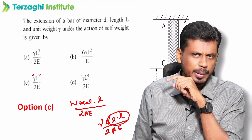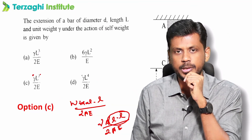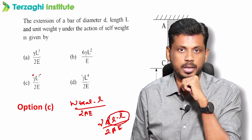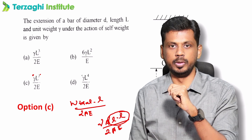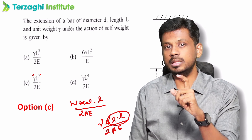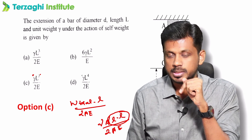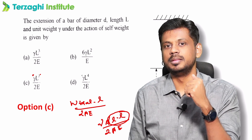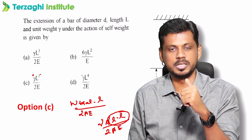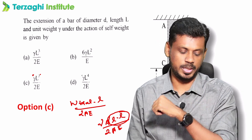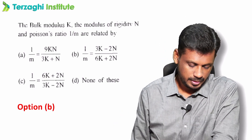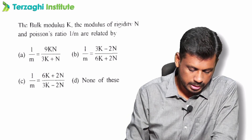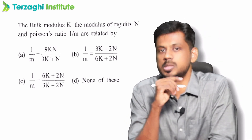For external load, the formula is PL by AE for a uniform section — this is the standard first unit formula. Next, bulk modulus and rigidity modulus. Rigidity modulus is generally called G.